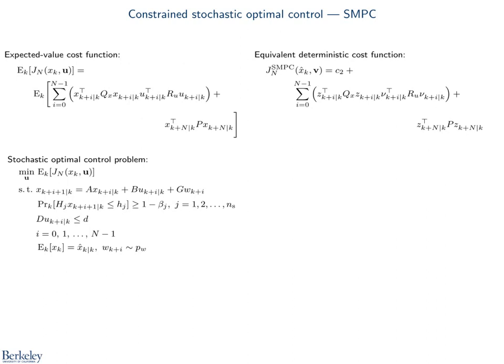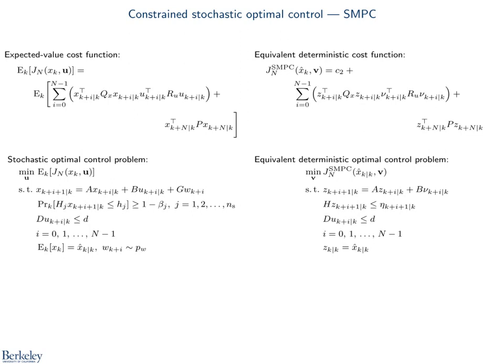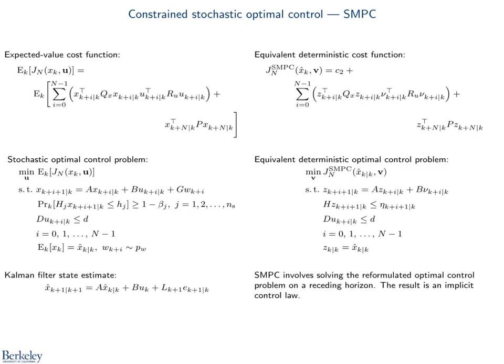In the constrained stochastic optimal control problem shown two slides back, the state constraints are probabilistic. We show how to arrive at a deterministic reformulation of the chance constraints, with the main challenge being how to modify the right-hand side, often called the back-off. This results in a standard quadratic program. The initial condition is a state estimate, here from the Kalman filter for simplicity. Stochastic MPC is solving this deterministic QP on a receding horizon.